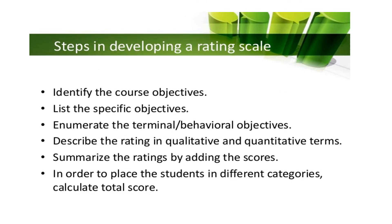Now we can see the steps in developing a rating scale in education. First, identify the course objectives. Then list the specific objectives and enumerate the terminal or behavioral objectives. Next, describe the rating in qualitative and quantitative terms, summarize the rating by adding the scores, and calculate the total score to place students in different categories.